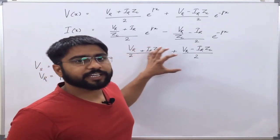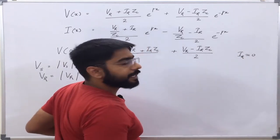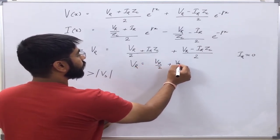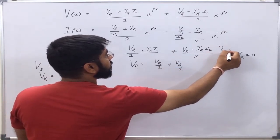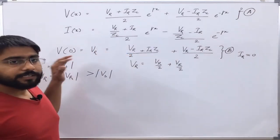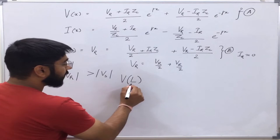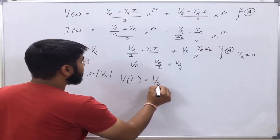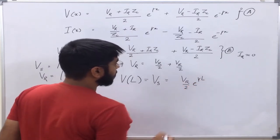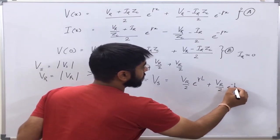We will see mathematically how we can explain the Ferranti effect. When Ir is very small or approximately equal to 0 — that is, the line is open-ended — I can write V at R equal to Vr by 2 plus Vr by 2, from this equation (equation B), and this is equation A. Now, the voltage at the sending end, where capital L is the length of the line, will be equal to Vr by 2 e raised to power gamma·L plus Vr by 2 e raised to power minus gamma·L.